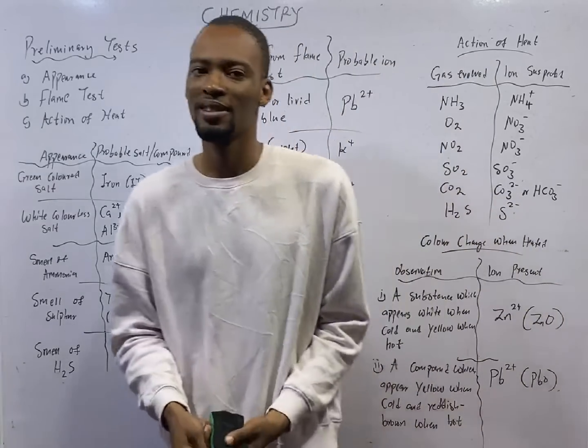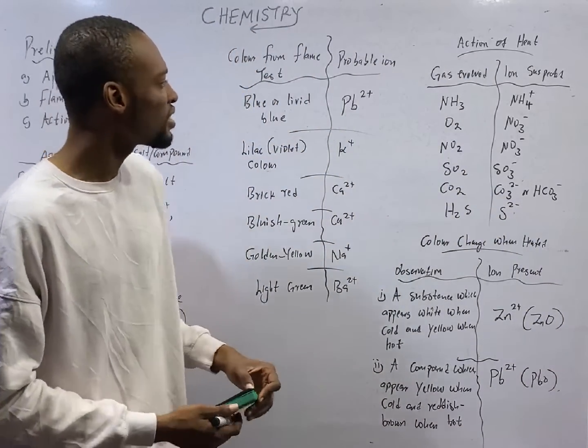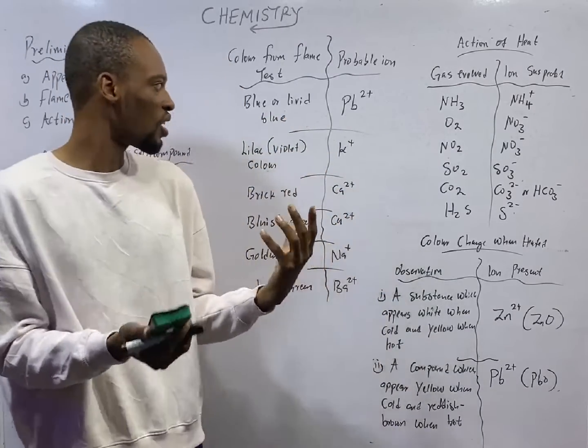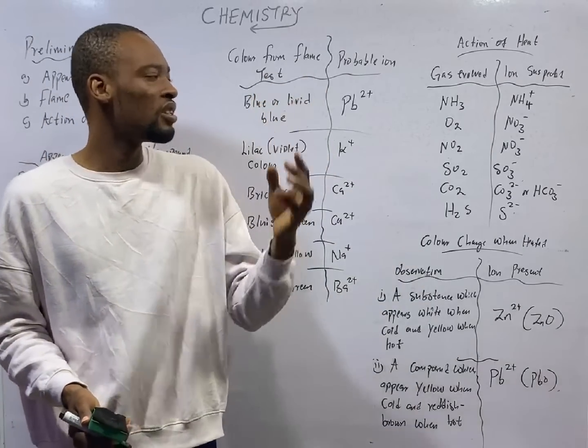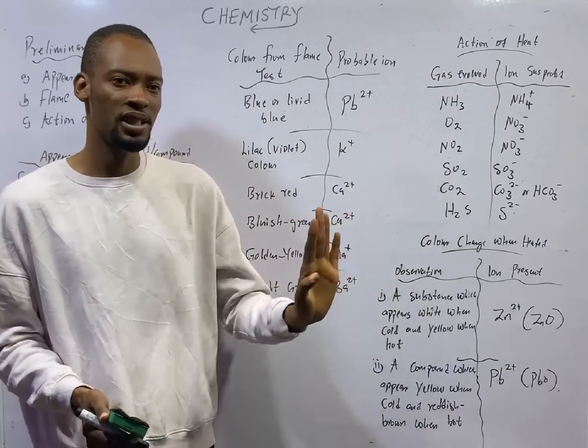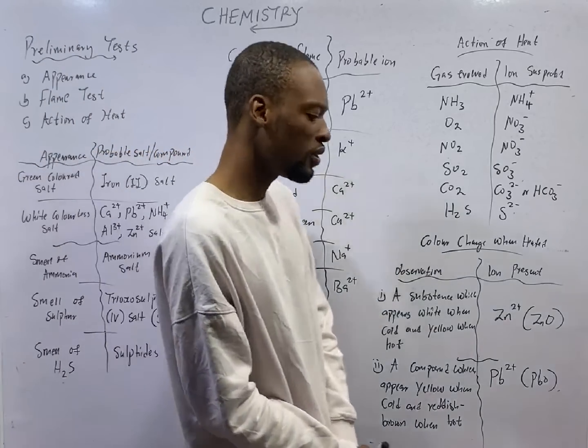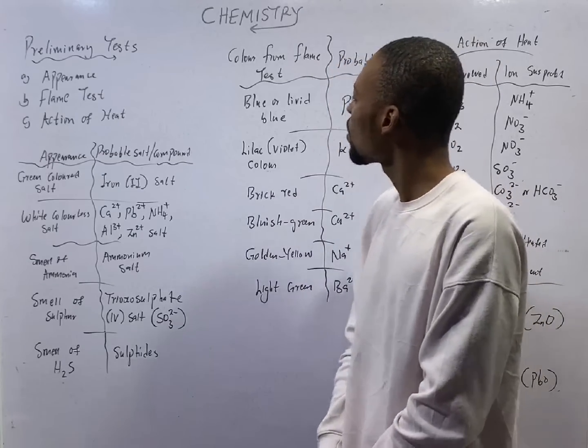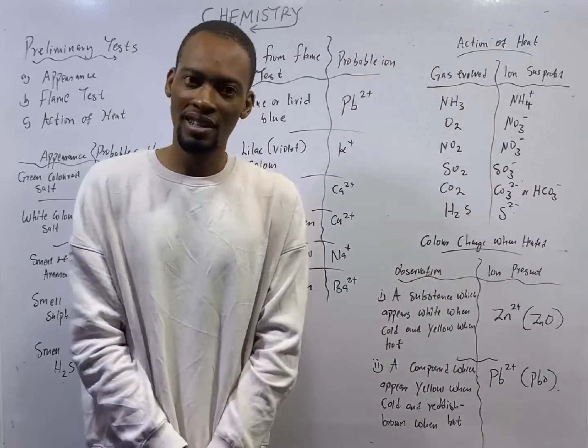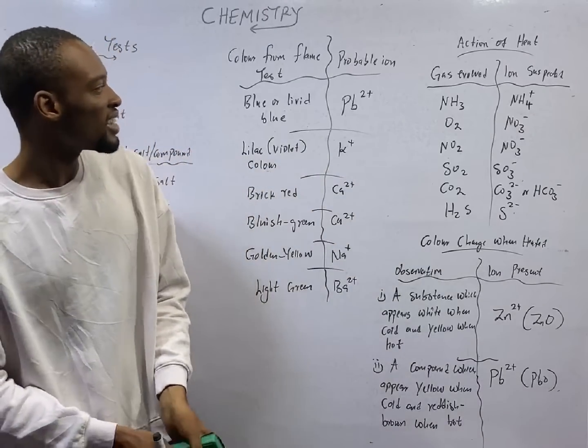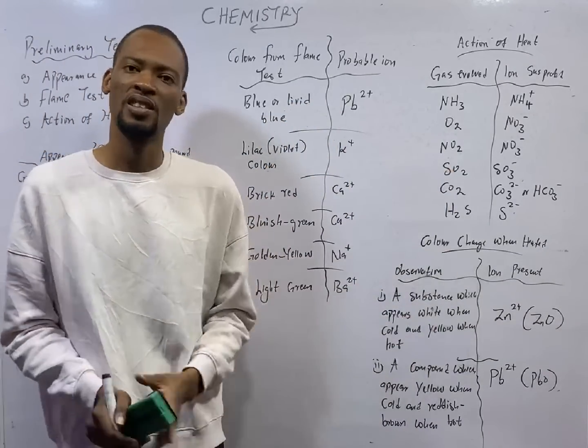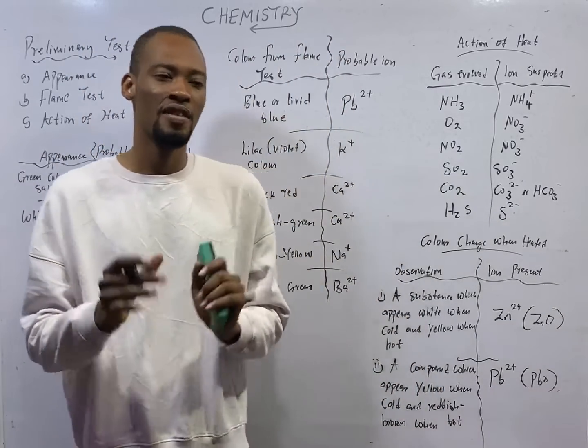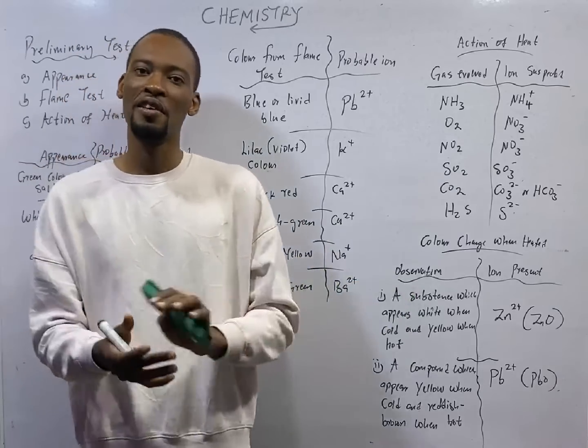These are appearance tests. Now let's look at flame tests. For color of flames, when a substance or compound burns with blue or livid blue flame, know that lead ion is present. It burns with blue or livid blue flames. Shall we say, a substance burns producing a blue or livid blue flame, which of the following is suspected? Know that it is a blue or livid blue flame.